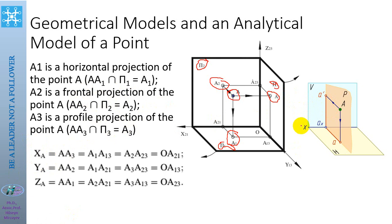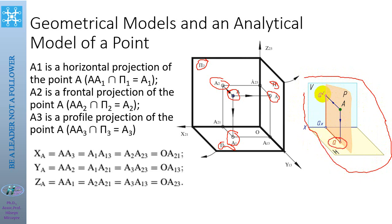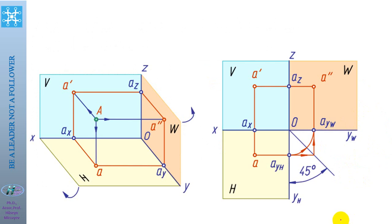Sometimes it is enough to show only two projections of a point. In this figure, given only two projections of point A: the horizontal projection on plane H and the frontal projection on plane V. The horizontal projection is denoted as A (small letter), and the frontal projection on plane V is the frontal projection.